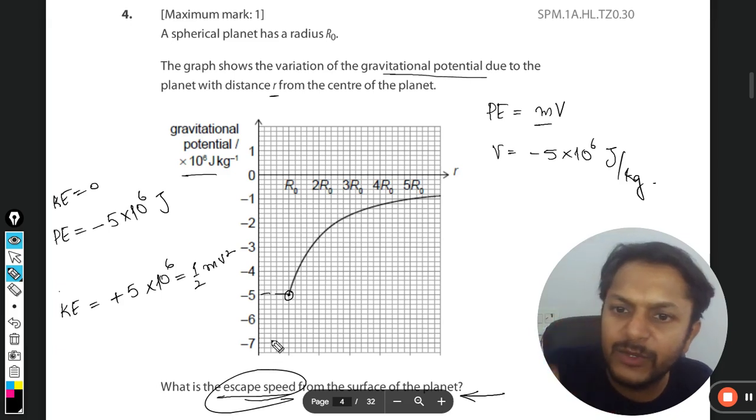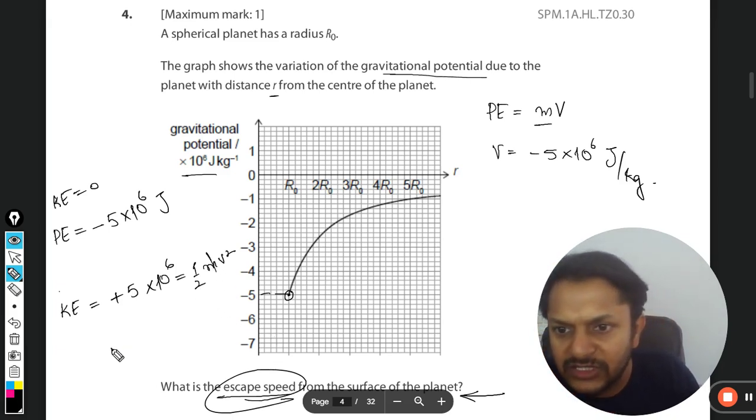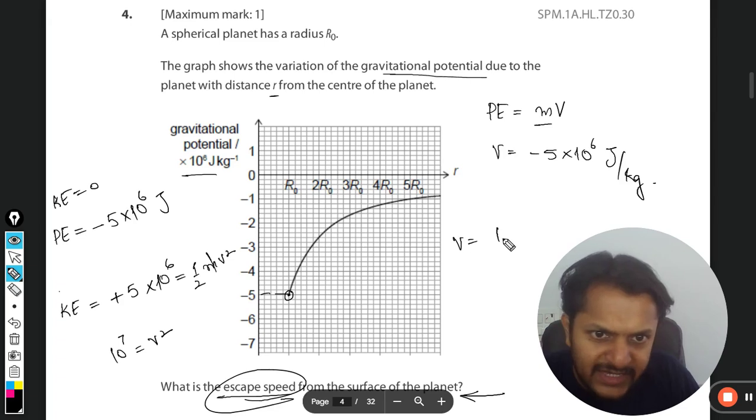And the question is what is this speed? So you want to find the speed. So m is taken to be 1 kg, so this 2 goes to the other side, it will become 10 × 10^6 is equal to v square. It means v is square root of 10^7.